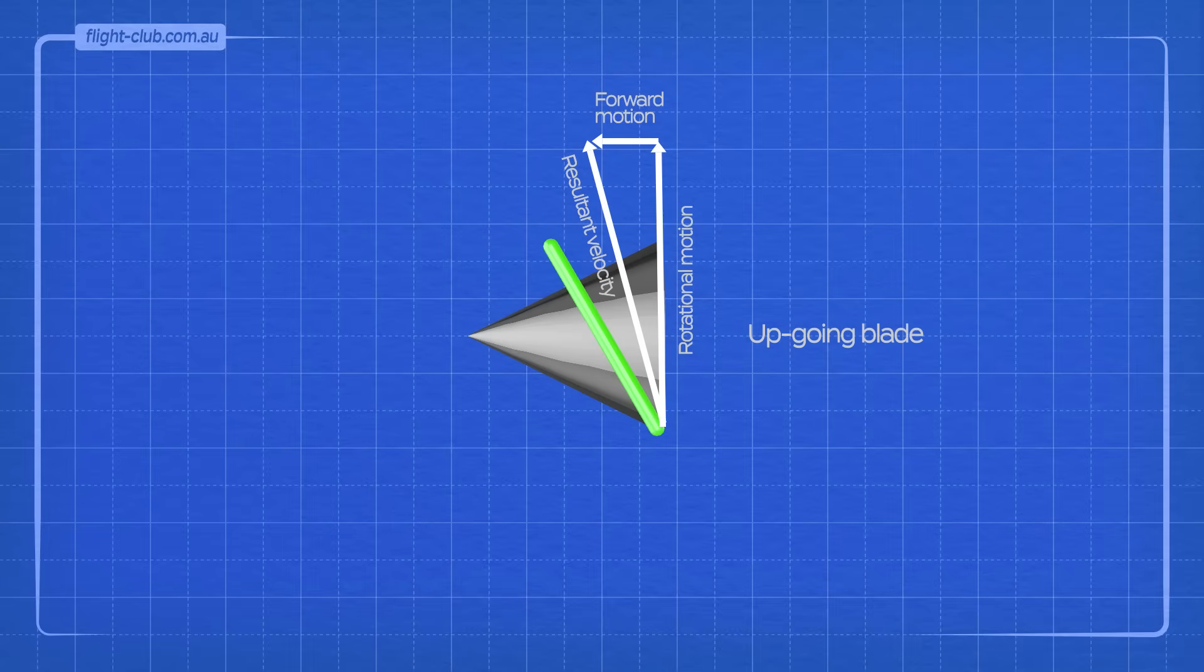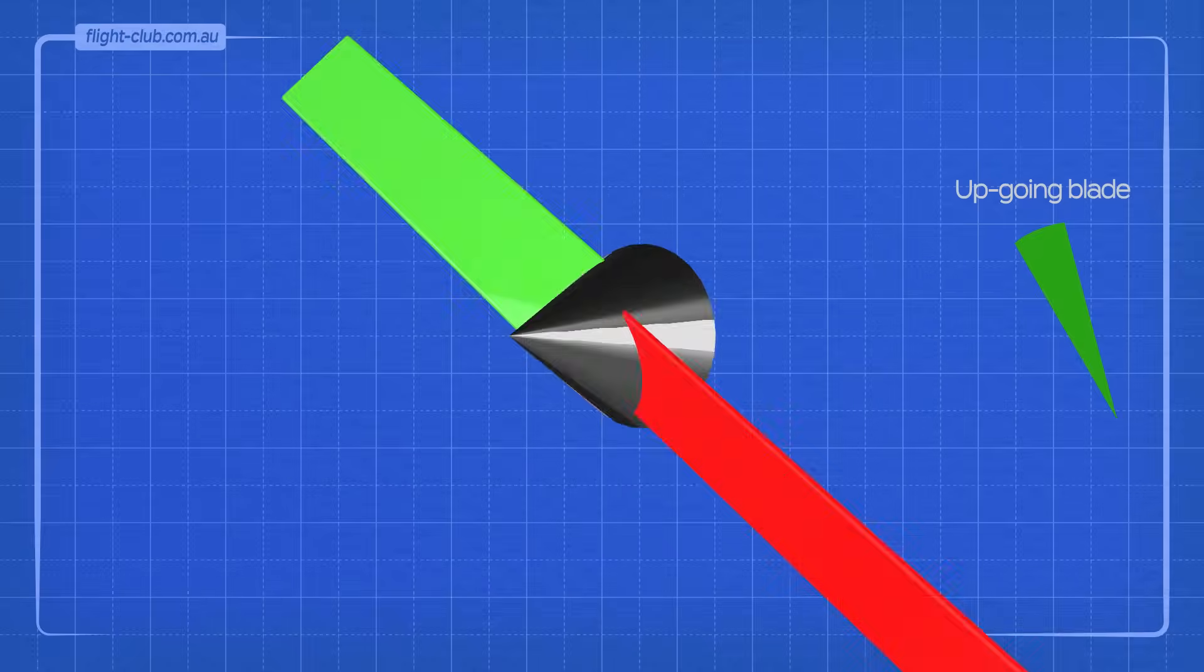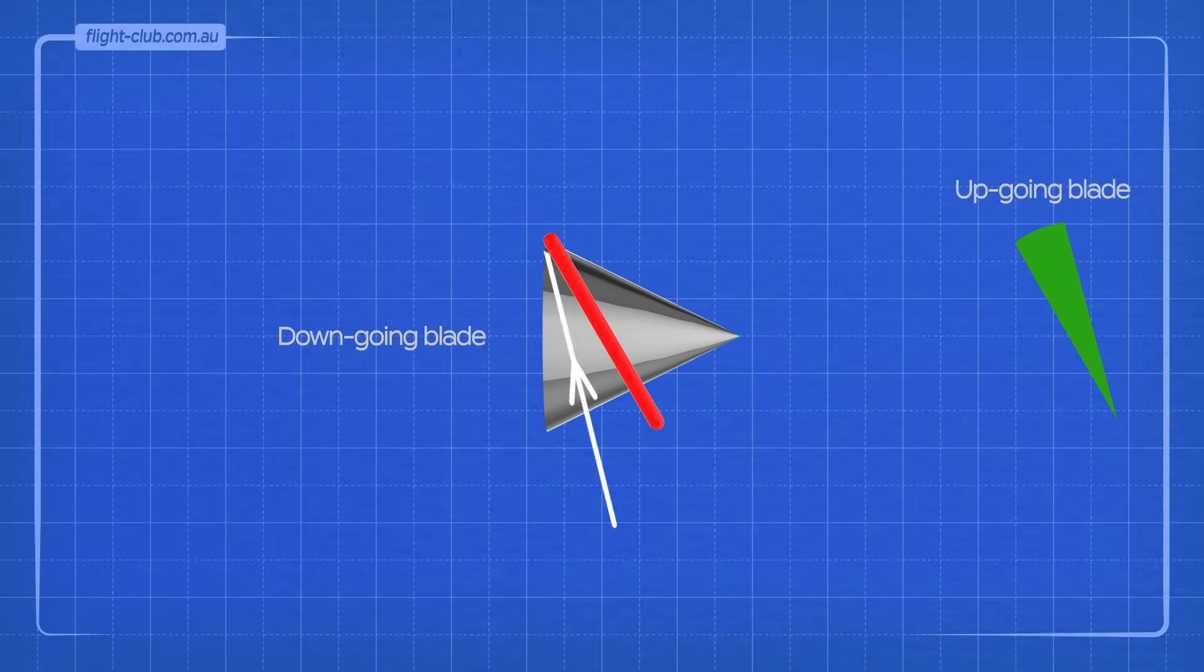The up-going blade experiences the relative airflow directly opposite its own flight path. The angle between the relative airflow and the blade is its very own angle of attack. The down-going blade also experiences a relative airflow directly opposite its own flight path, and this is its angle of attack.